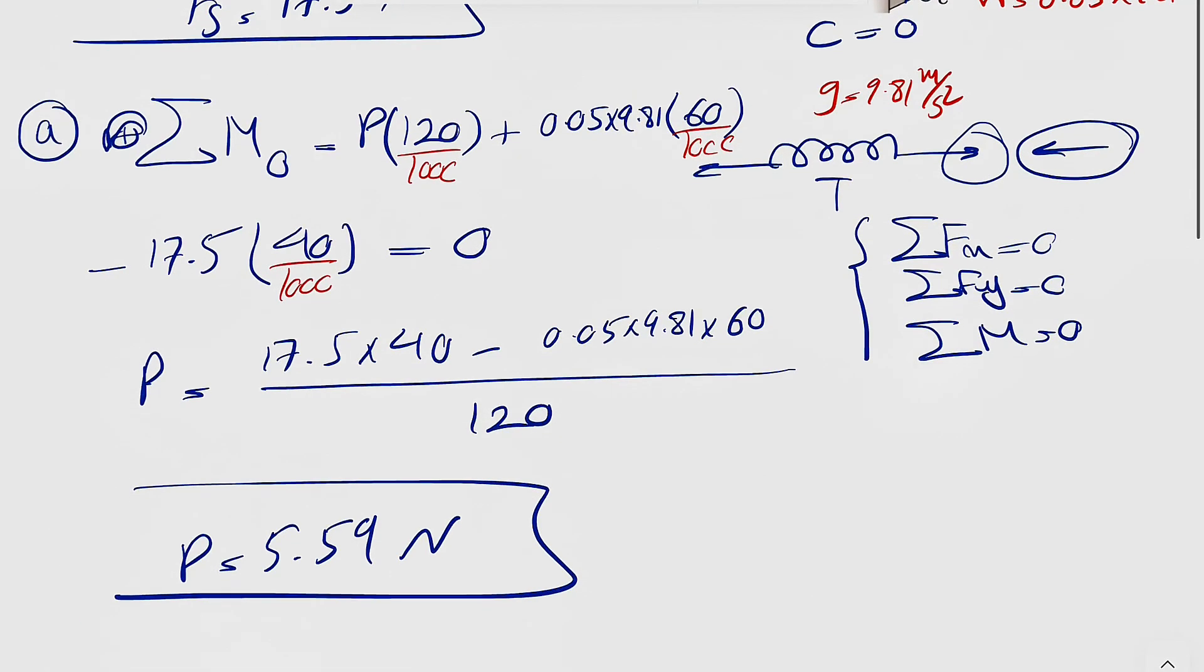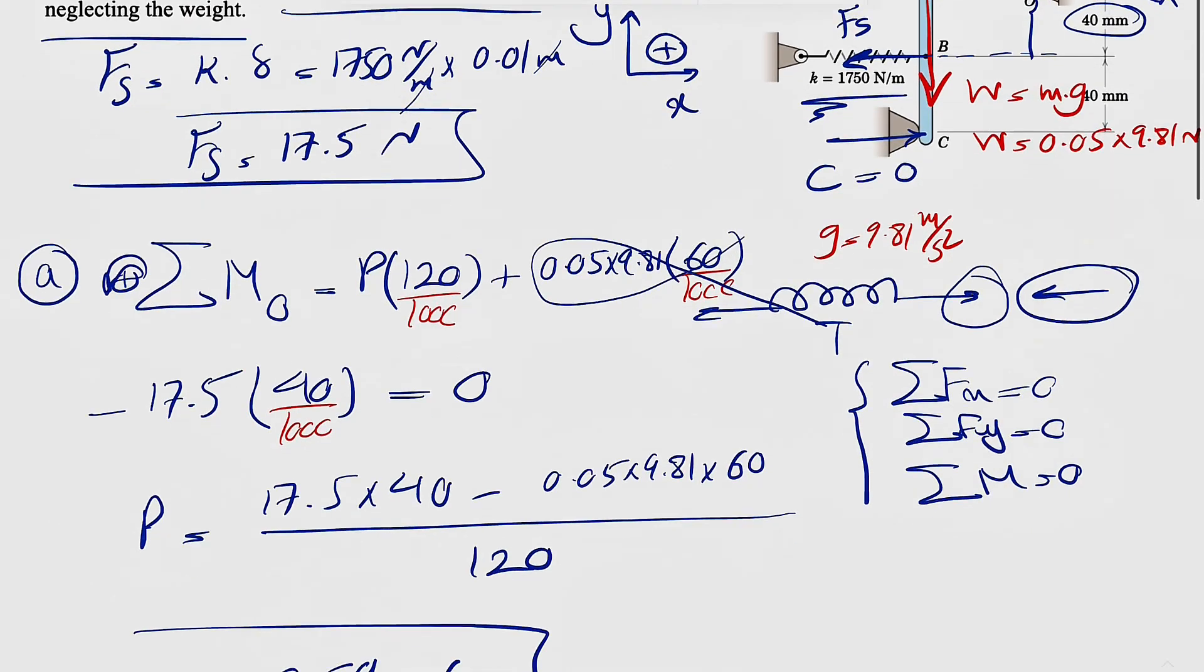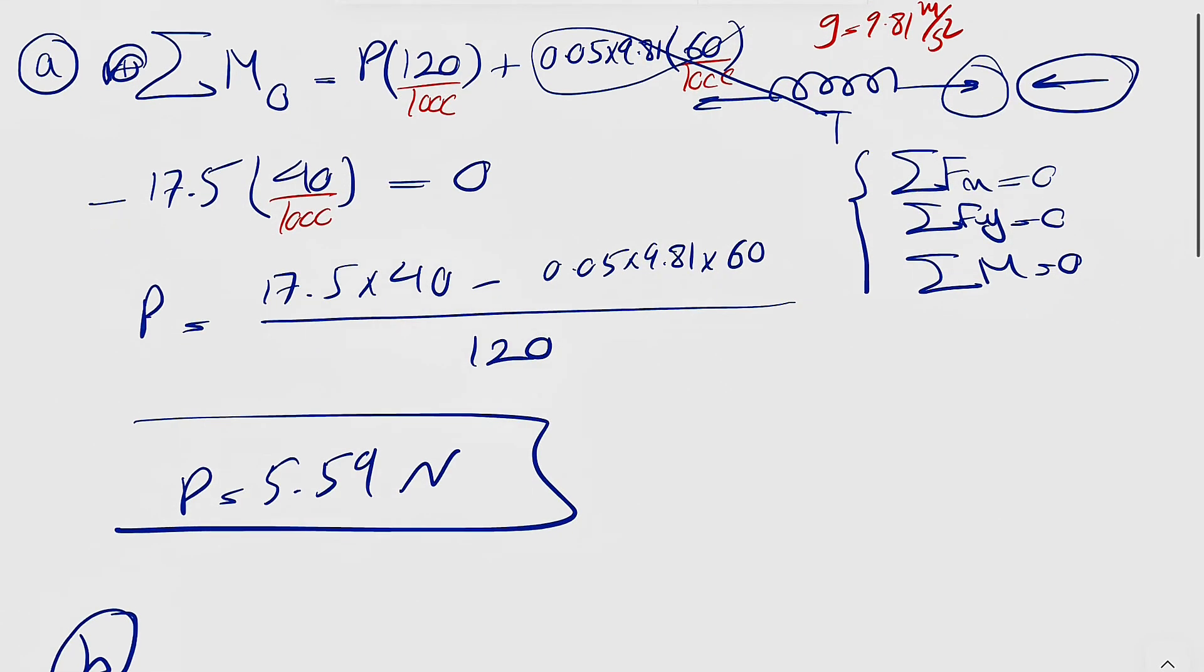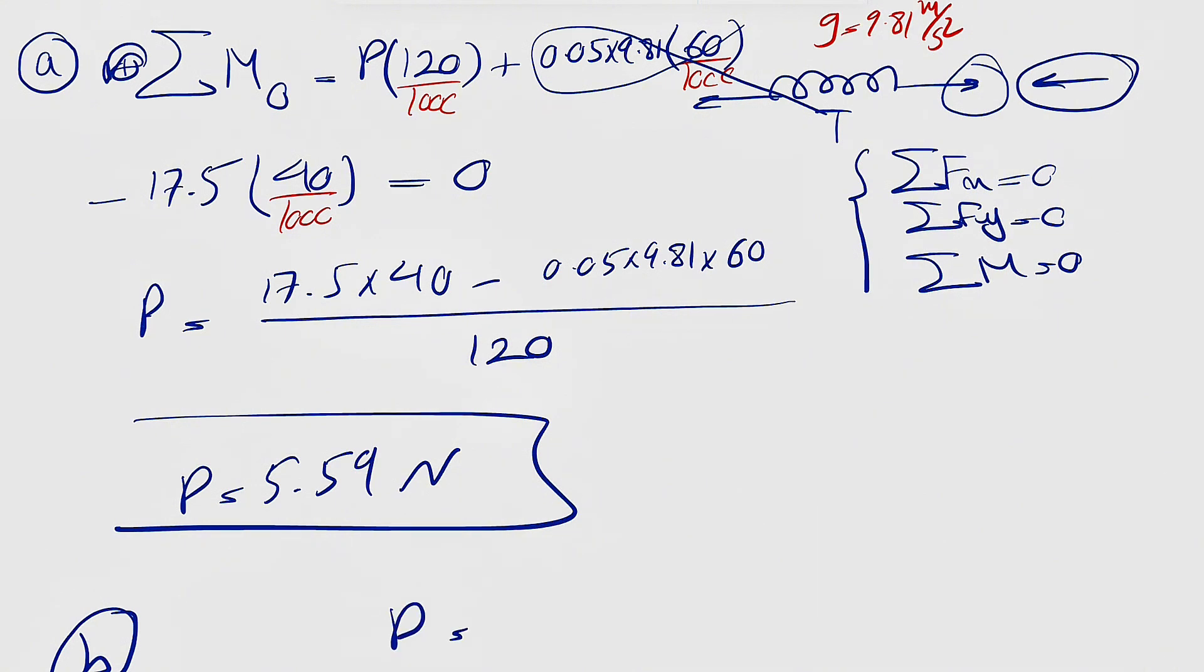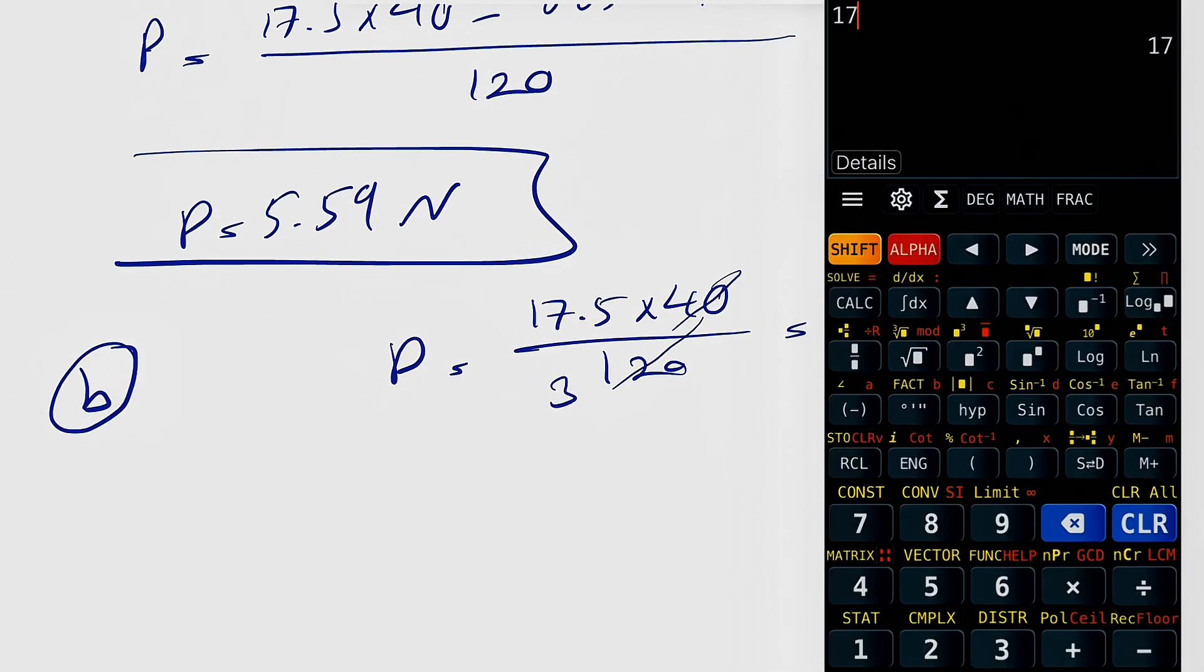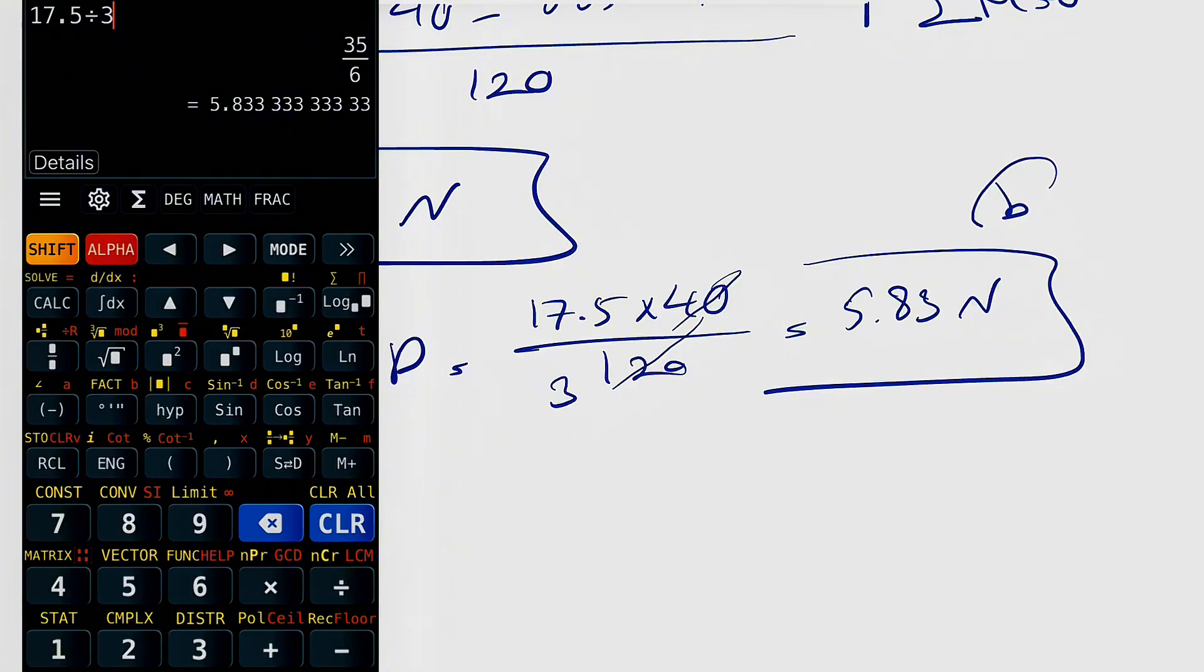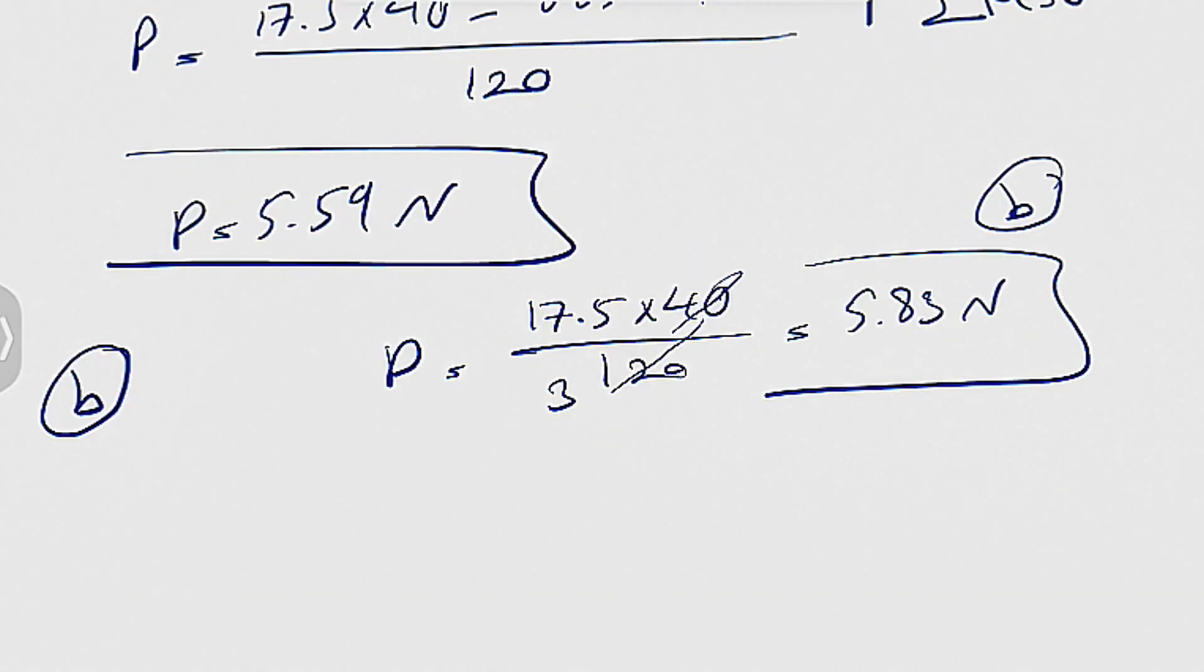For part B, everything is the same except we won't have the moment of the weight since the question asks us to neglect it. So P = 17.5 × 40 / 120, or simply 17.5 / 3. That gives us 5.83 Newtons for part B.